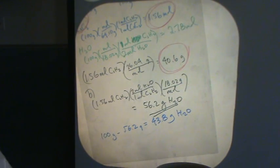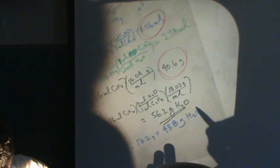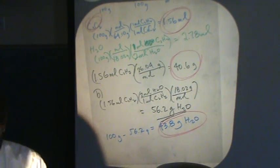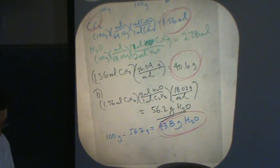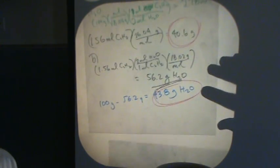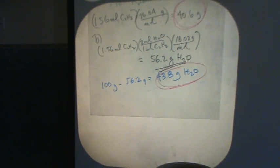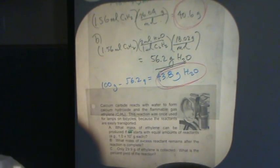That's how much water is unused. Okay, or remaining. Let's circle that one. That's my answer to part B. 43.8. Now let's take a look at part C. Part C, it says only 29.9 grams of ethylene is collected. What is the percent yield?